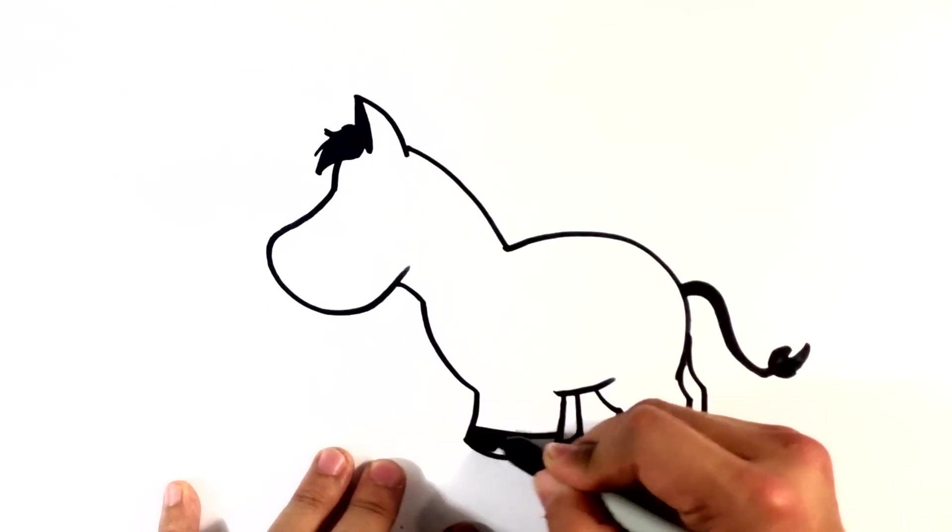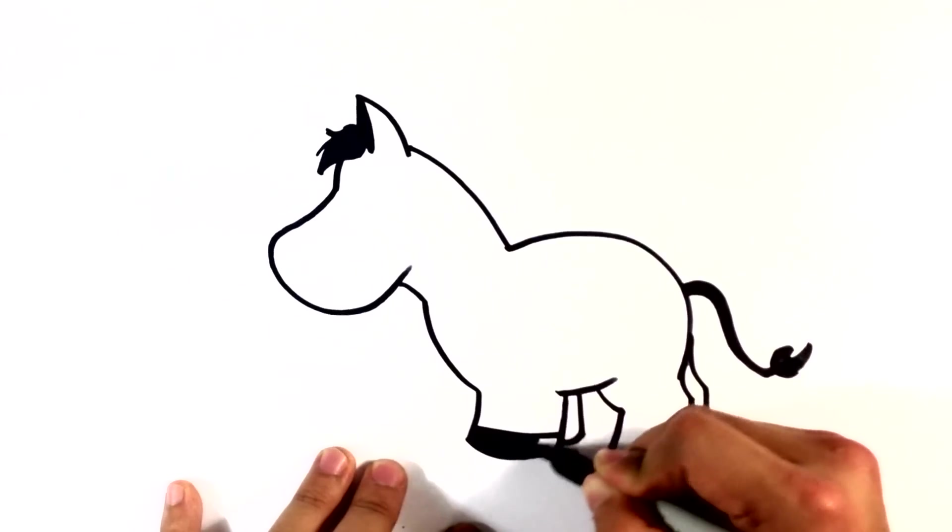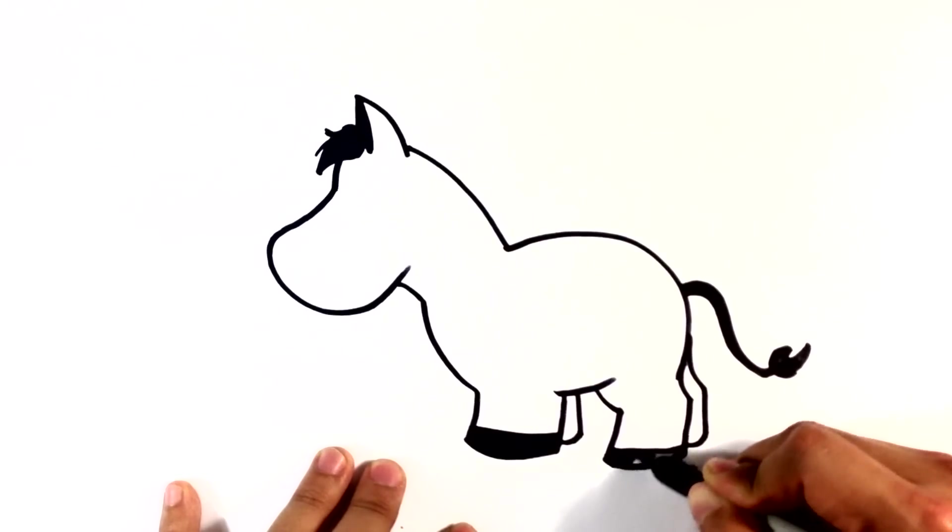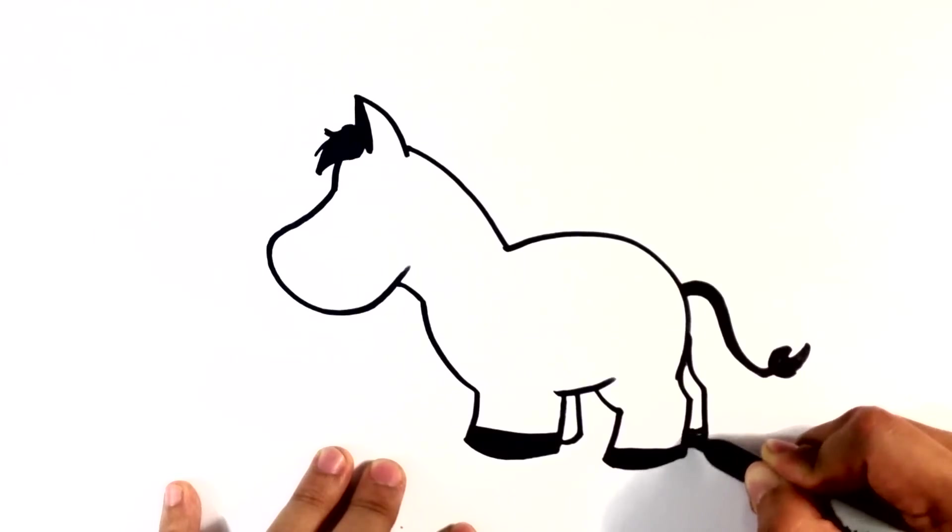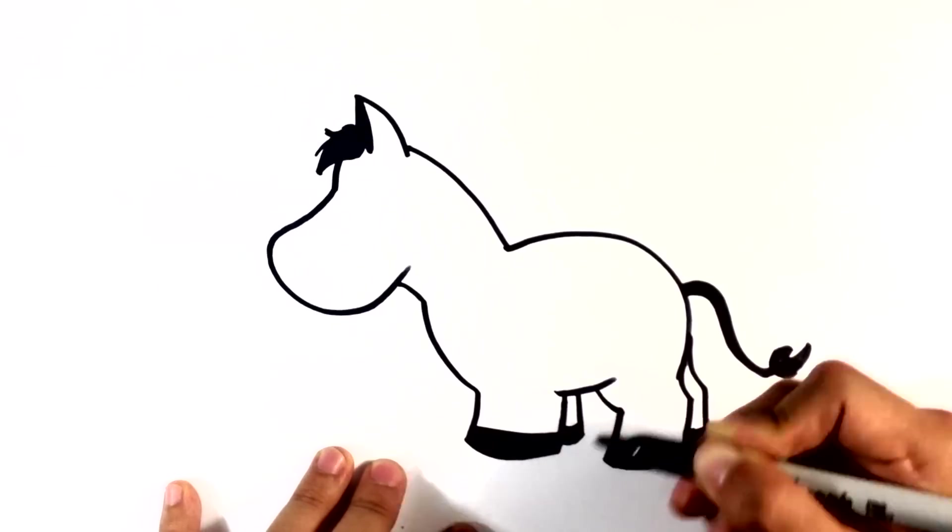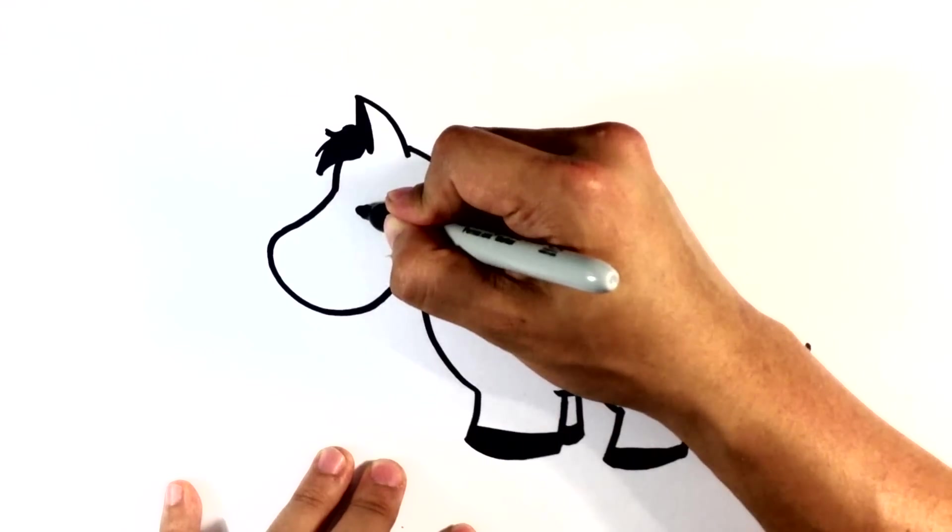Color in the hoof, kind of shading in there. Same thing in the back. Dot here for the eye.